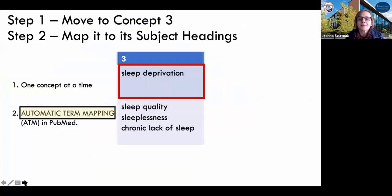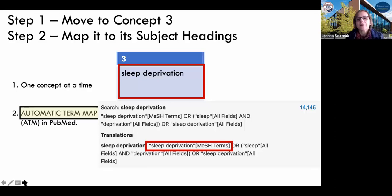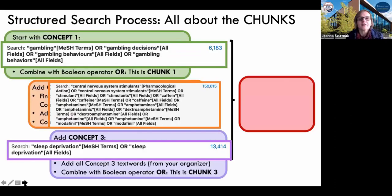And our third concept is sleep deprivation. So let's do some automatic term mapping for that. So once again, we find out that we have a mesh term for sleep deprivation. Fantastic. We also have an all fields, which means a text word sleep deprivation. So we're going to use those two in this search. So we have a small number of entries for gambling. We have a smallish number for sleep deprivation, an absolutely huge number for our central nervous system stimulants. So that's fantastic.